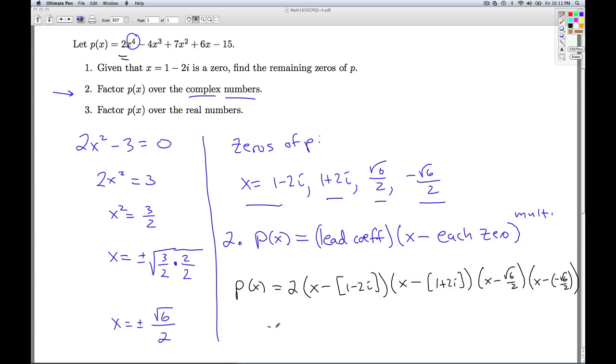I can clean this up a little bit. It's 2 times, distribute the negative: (x - 1 + 2i)(x - 1 - 2i)(x - √6/2)(x + √6/2). So this would be P(x) factored over the complex numbers.